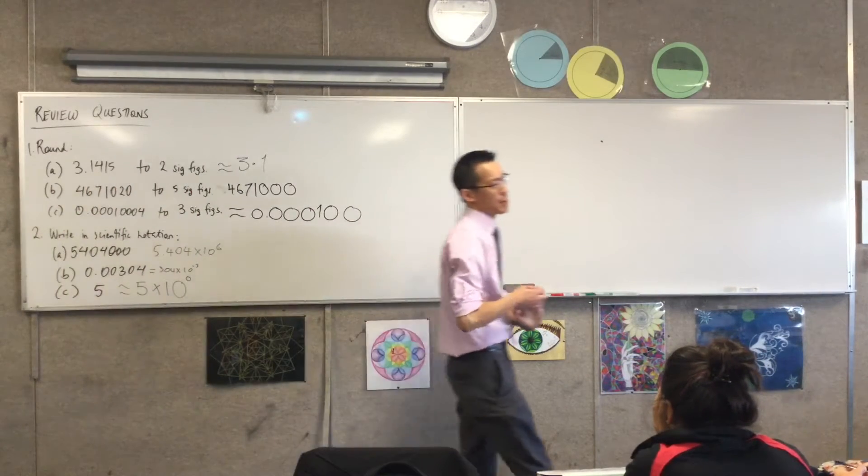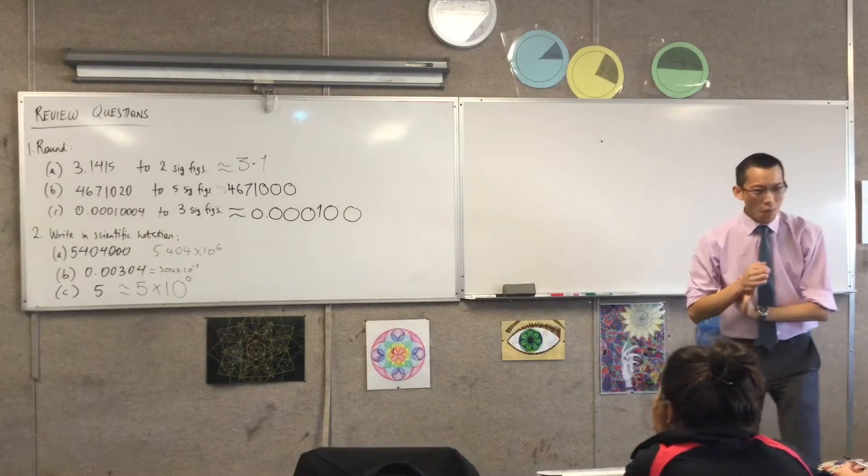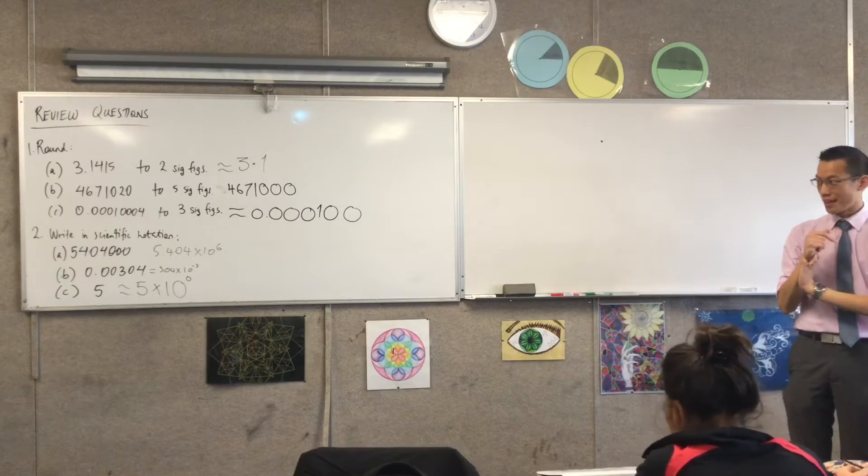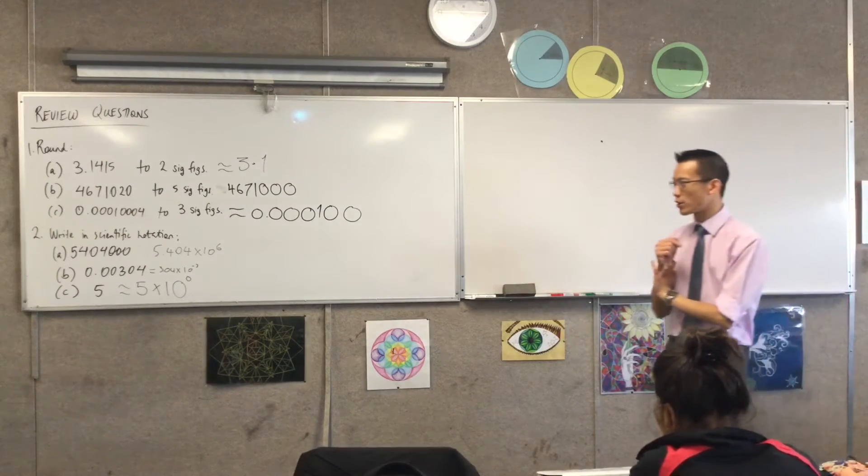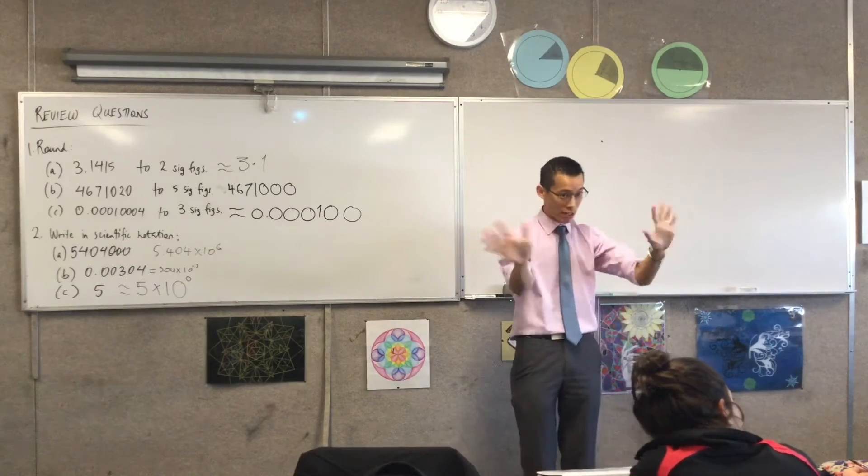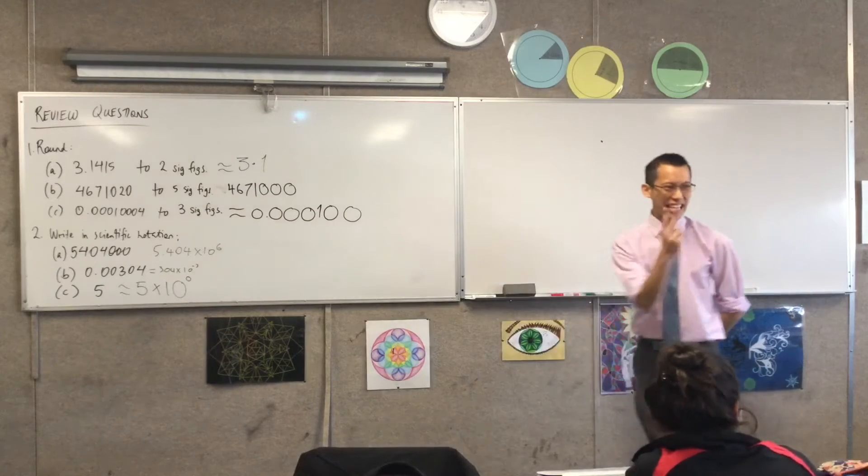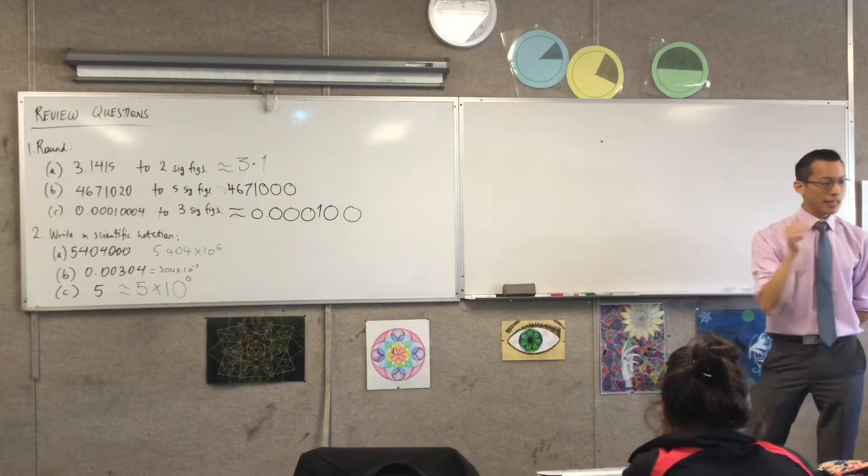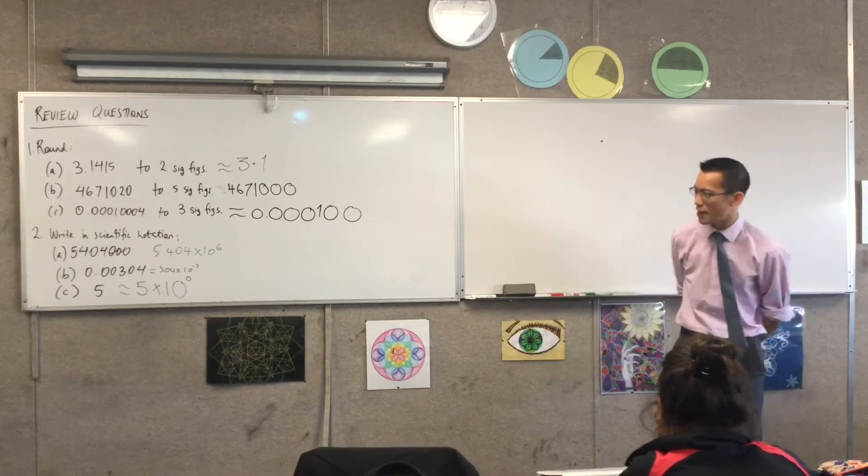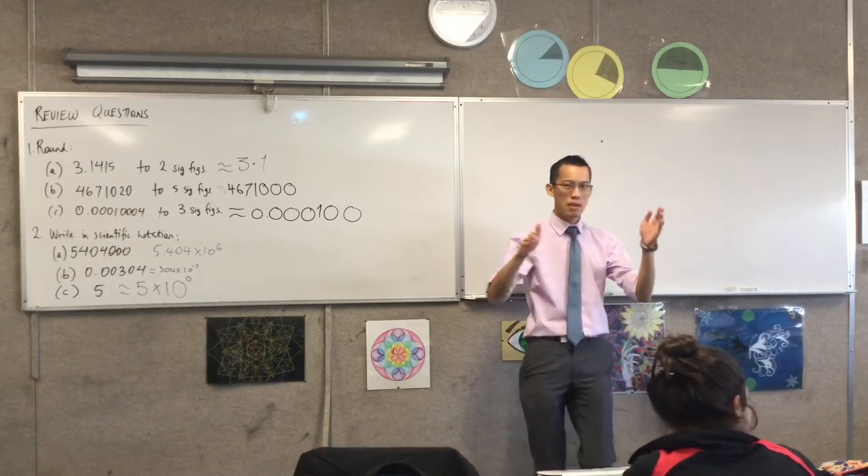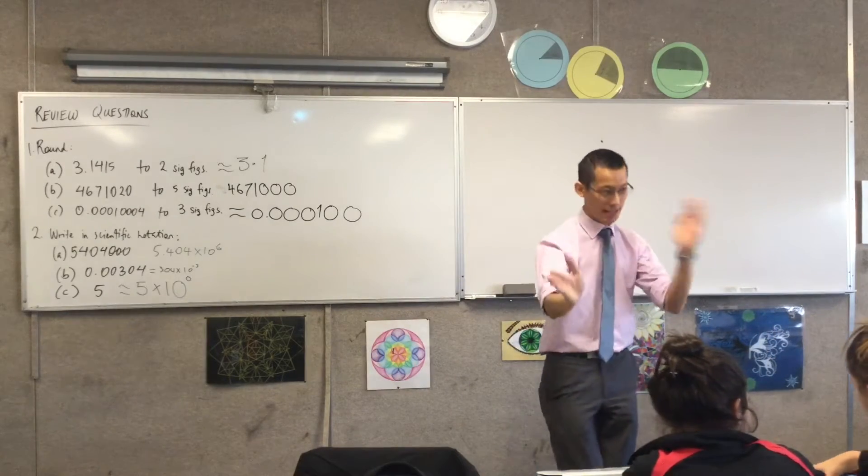We're trying to make sure that these numbers are... We're looking for a few different things. Firstly, we're looking for a product of two numbers, so something times something. Secondly, we're looking for that first number, which in this case is 5.404. We're looking for that first number to be between 1 and 10.